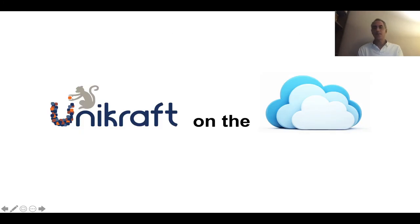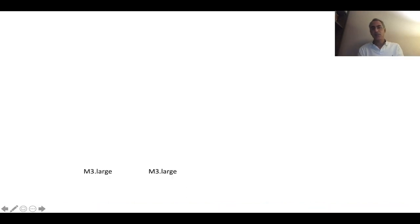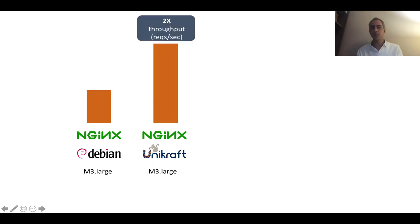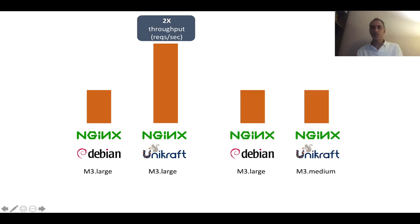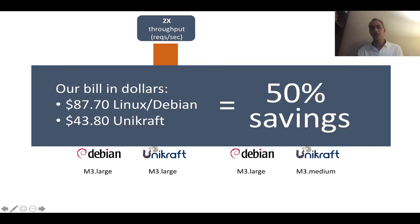We also took Unicraft to the cloud and did a test by deploying Unicraft on Amazon EC2. For this test, we took two large instances. On one, we put a standard Nginx Debian image with Linux. On the other, we put the same Nginx version but on Unicraft. We did a throughput test and got about two times the throughput. We also compared a large Linux instance against a medium Unicraft instance, and got about the same performance — meaning it's 50% more efficient. We looked at our bill on the Amazon EC2 console, and we basically had 50% savings by using Unicraft in this scenario.